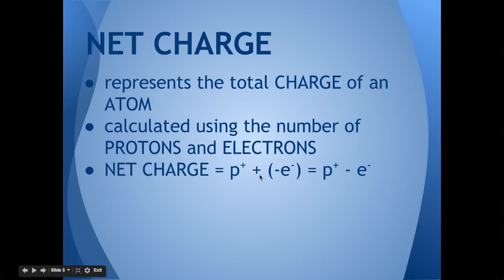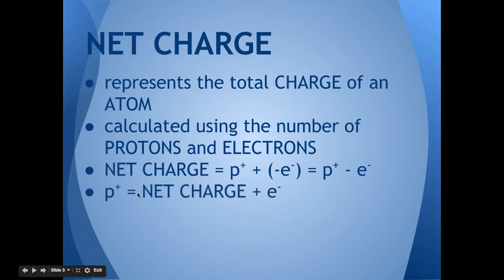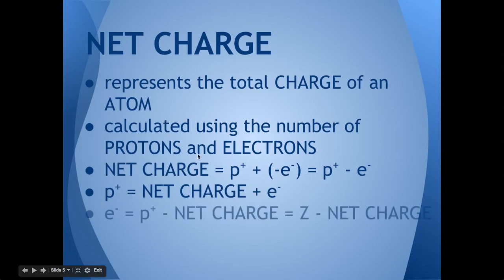Net charge is calculated using the number of protons, and you add that to the negative number of electrons, because electrons have a negative charge — so you multiply by negative one. You could also just take the number of protons and subtract the number of electrons to find the net charge. To find the number of protons, you add the net charge and the electrons together. To find the number of electrons, you take the protons — or Z — and subtract off the net charge.